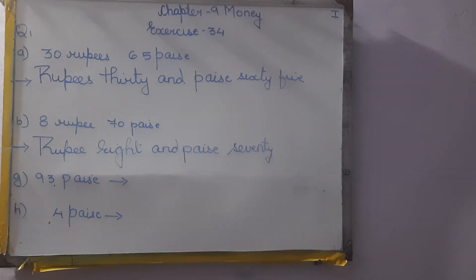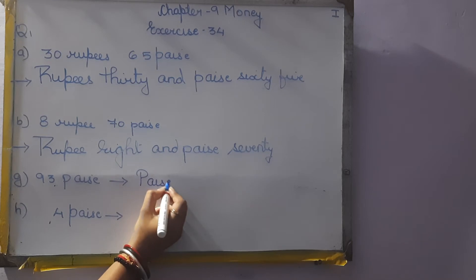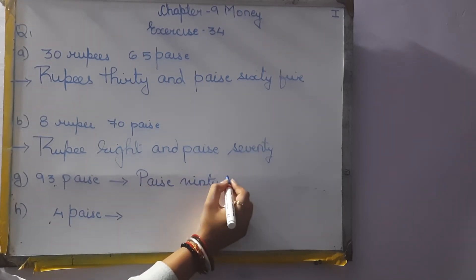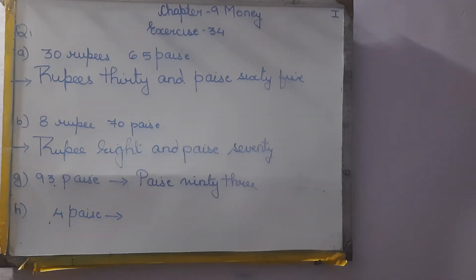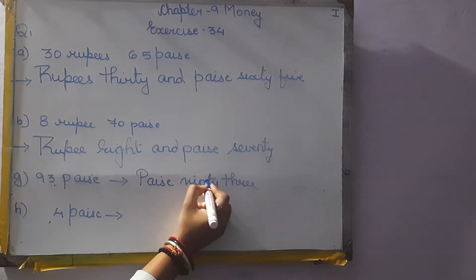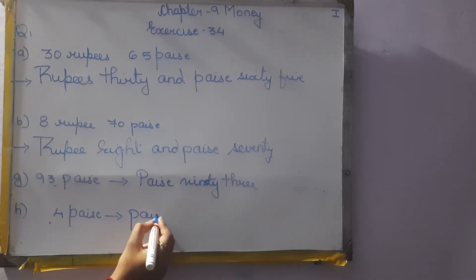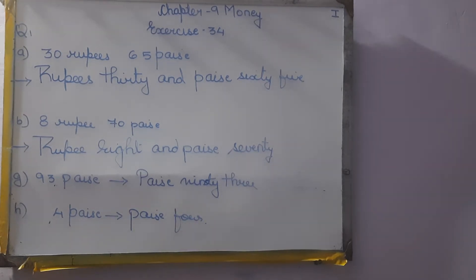Children, mark C1 as homework. Now G: 93 paise. So how we are going to write? Paise ninety-three. And this will be paise 4.